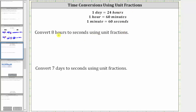We first write eight hours as a fraction with a denominator of one. And now I multiply by unit fractions to convert hours to seconds. Notice how there is no direct conversion from hours to seconds, so we will have to use more than one conversion.